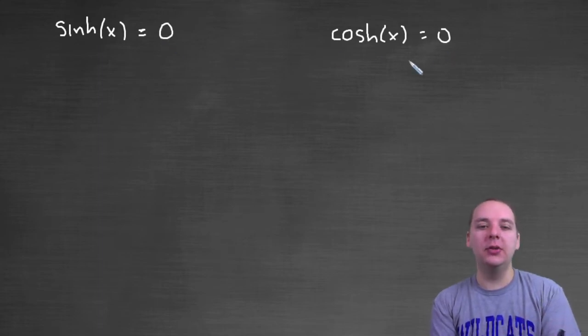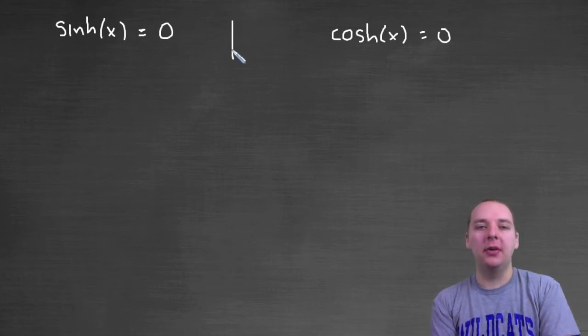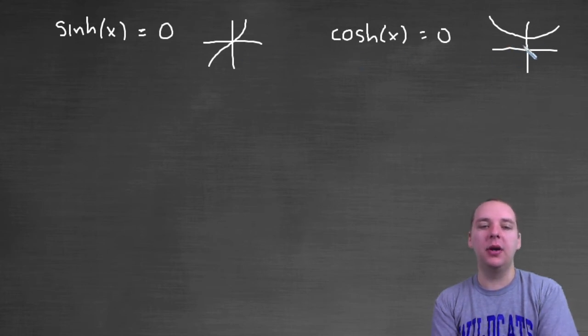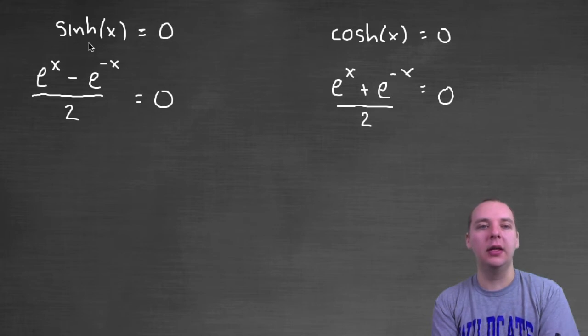There's a couple different ways you could approach this. You could think of it graphically because we know what hyperbolic sine looks like and what hyperbolic cosine looks like, those catenary guys we talked about in a previous video. But let's do this more algebraically. We know the definition for hyperbolic sine and hyperbolic cosine.